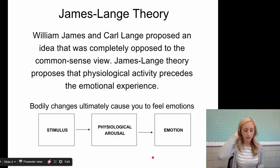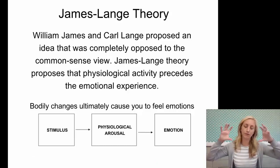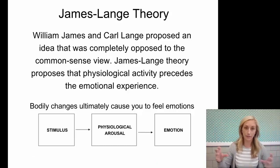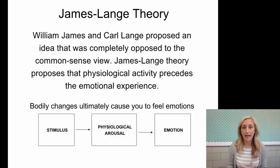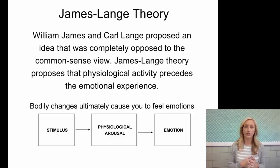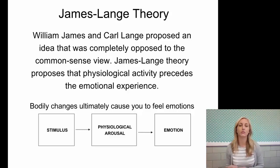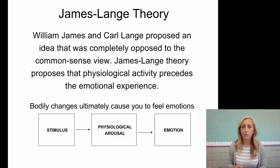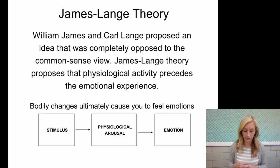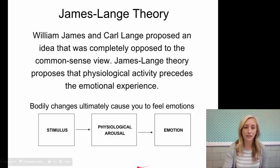There are some theories here. In your notes, make sure you see it visually and write down some examples. James-Lange is the first theory. William James and Carl Lange proposed an idea completely opposed to the common sense view of emotion. The theory proposes that physiological activity precedes the emotional experience — bodily changes ultimately cause you to feel emotions.